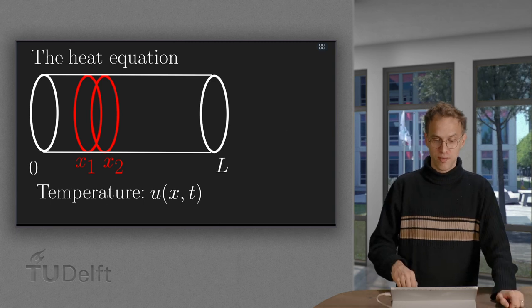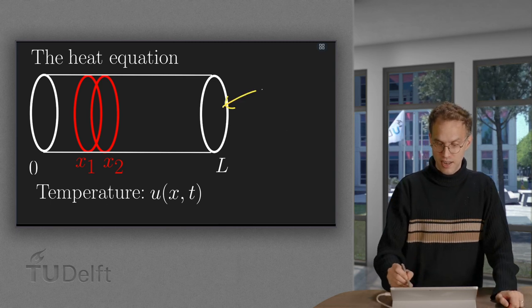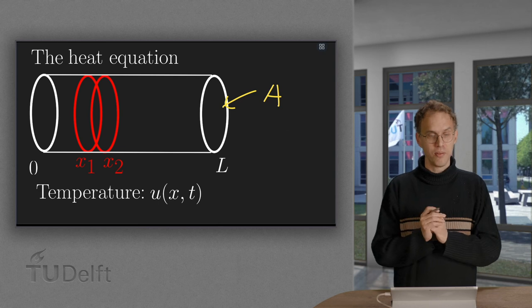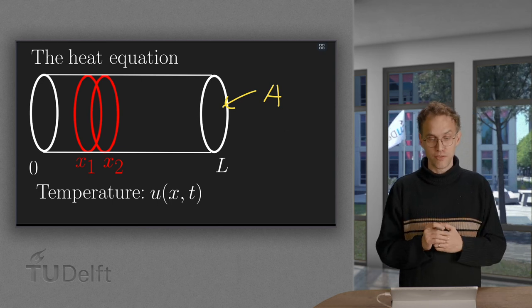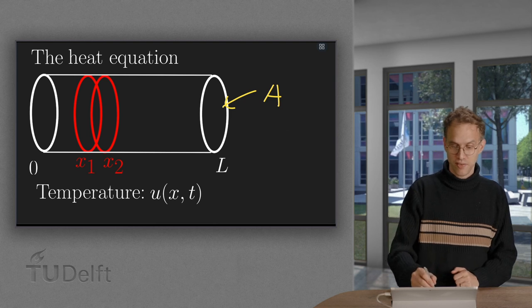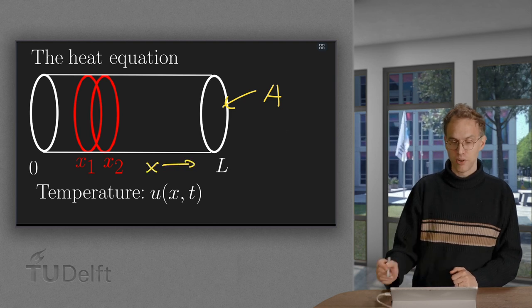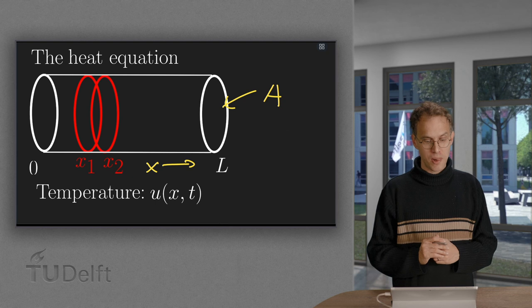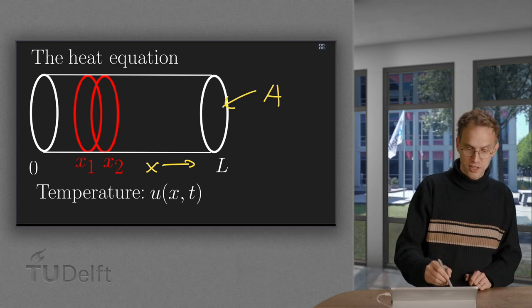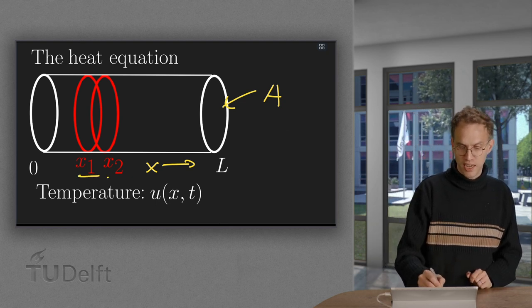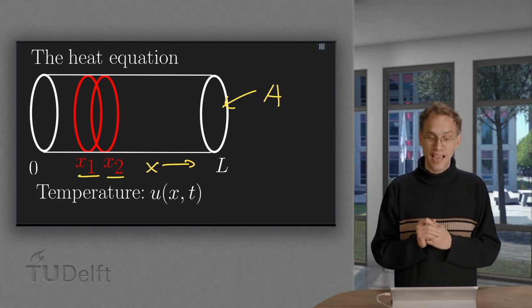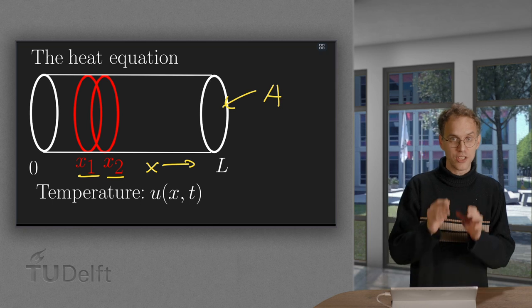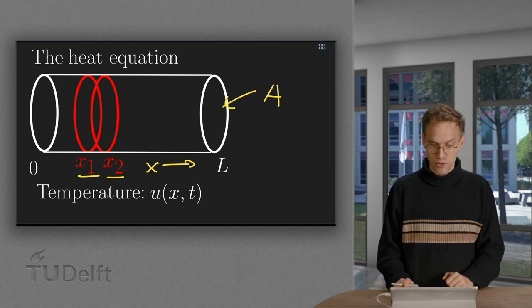Suppose we have some rod with some area A and length L. And let us describe the temperature in the rod as a function U of X and T. X is the coordinate along the rod. Suppose now we take some small segment here between X1 and X2. Then we are going to look at the energy balance in this small segment of the rod.